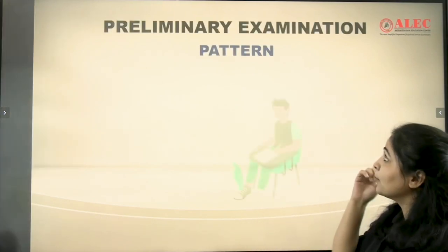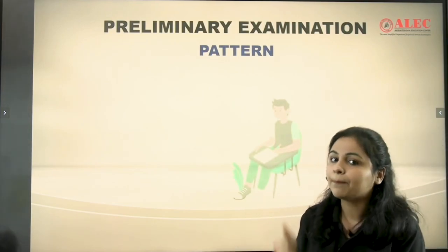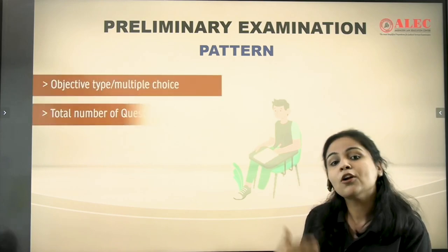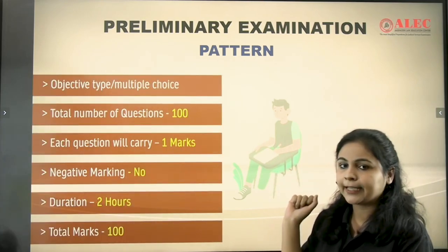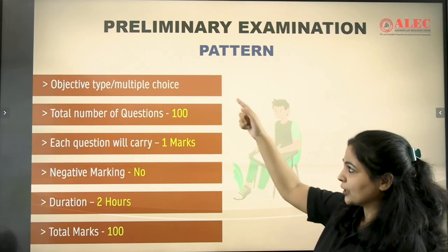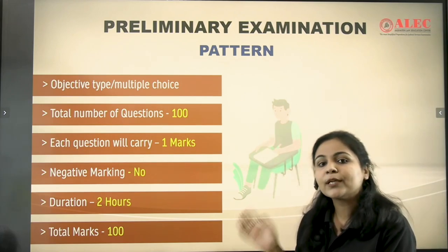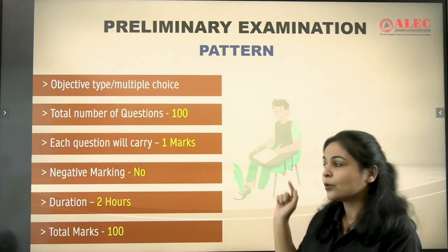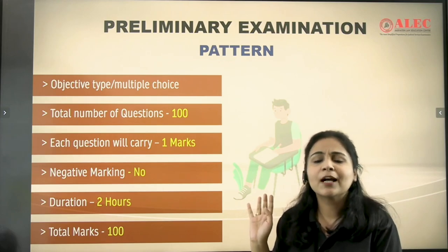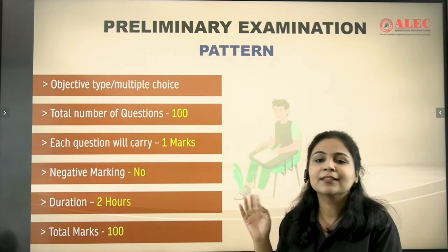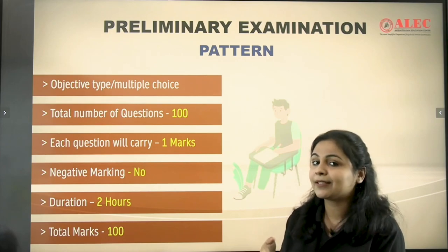Let's start with the preliminary examination. In terms of pattern, this is an objective type exam with multiple choice questions. The total number of questions is 100, and every question carries 1 mark. Importantly, there is no negative marking here, so you can attempt guesswork. If you are not certain about any answer, you will not be penalized.